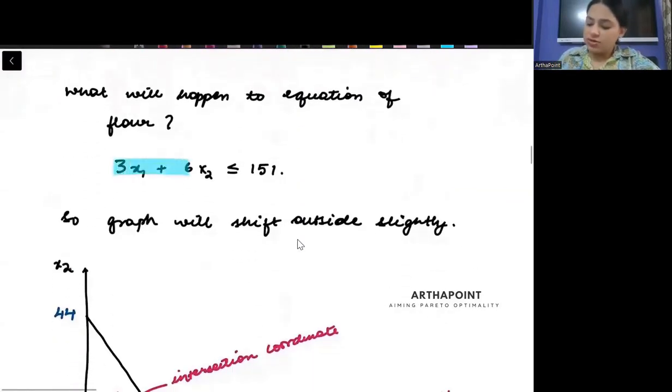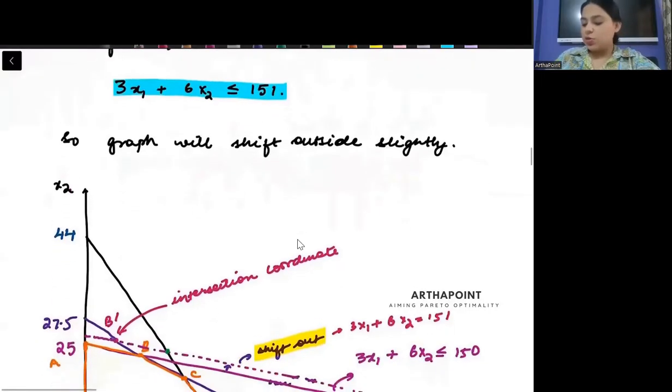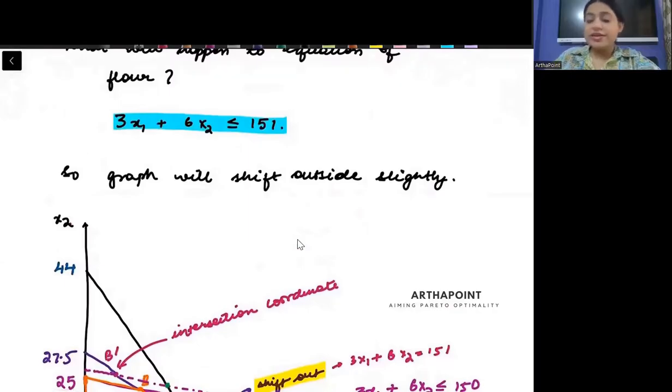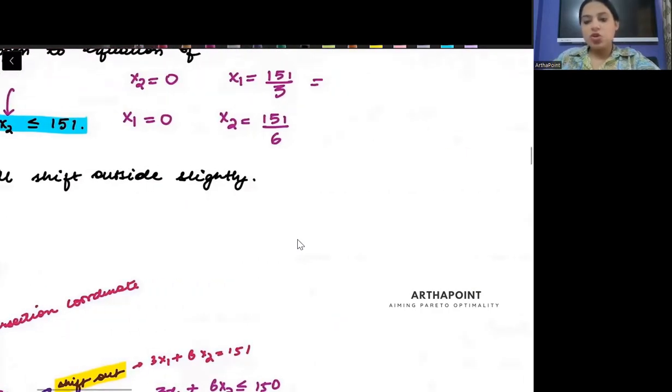So try to see that now my equation will be 3x1 plus 6x2 less than equal to 151. But if I just now look at the intercepts, what is going to happen? When I will put x2 as 0, if I put 0 here, then I will get x1 as 151 by 3 instead of 150 by 3. But if I put x1 as 0 here, if I put this 0, I will get x2 as 151 by 6. These will be my two points. You can clearly see that if you just go ahead and solve this, 151 divided by 3, this gives you 50.34.